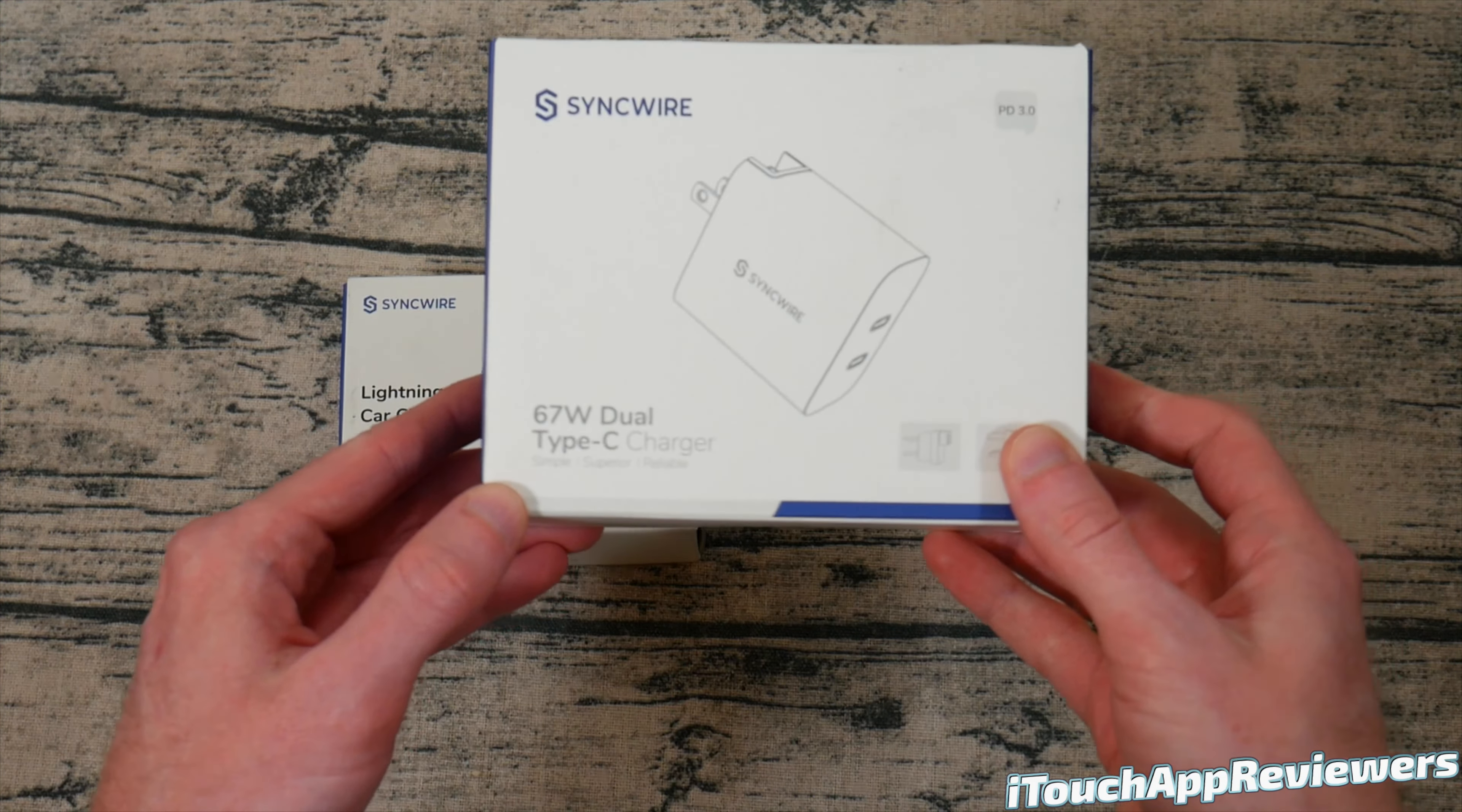So let's start off with the 67 watt dual type C charger and taking a quick look around the box. Here are the specs. If you want to pause the video and take a screenshot of it, but let's go and get the knife and cut this open. So we'll slice right through this little bit of tape here and open it up. And here's what we have inside. A really neat presentation here. I'm going to pull this out here. It looks like we have maybe a European style connector. And honestly, I don't even know what these are. There's some sort of connectors for other parts of the world.